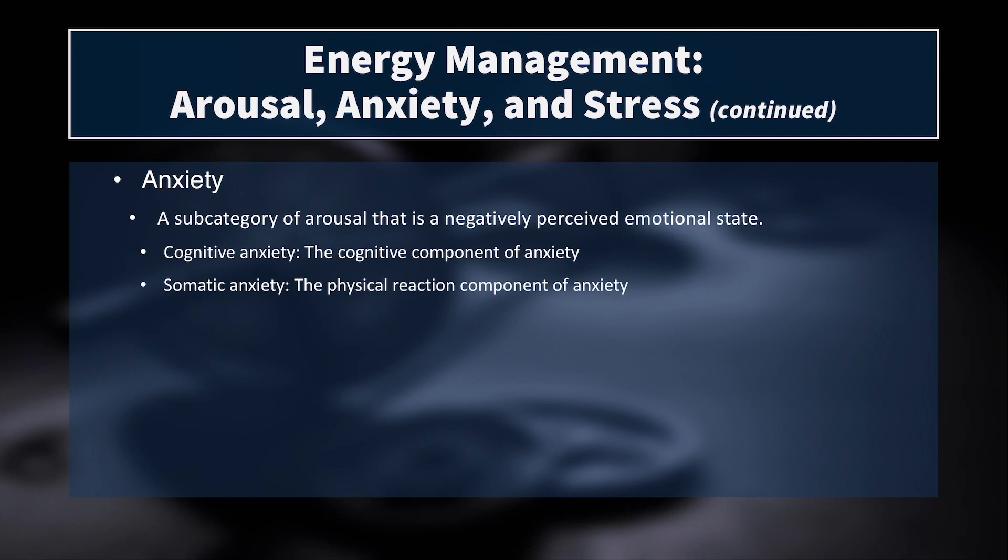Anxiety is a subcategory of arousal — it is a negatively perceived emotional state. There are two types: cognitive and somatic. Cognitive refers to the component of anxiety in your mind — the psychological component. Somatic anxiety is the physical reaction, the physical manifestation of that anxiety in your body: heart palpitations, tense muscles, the dilation of your pupils.